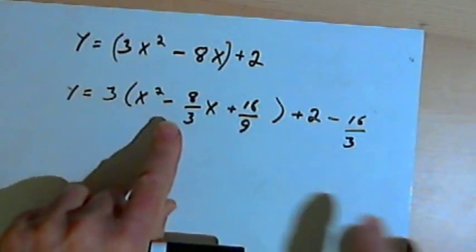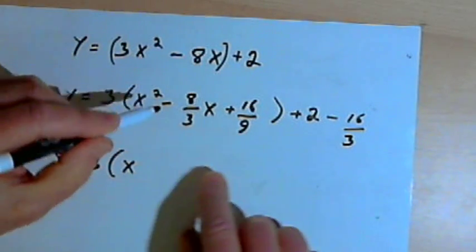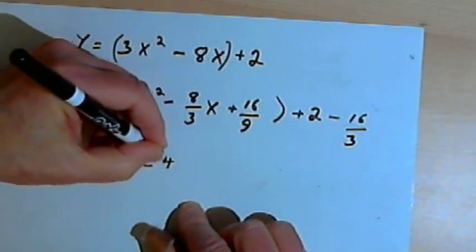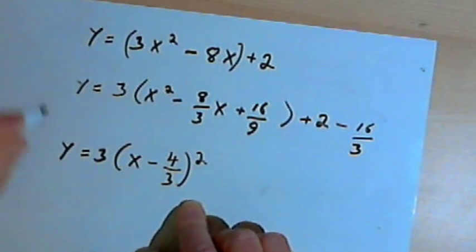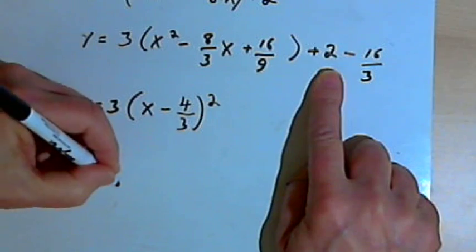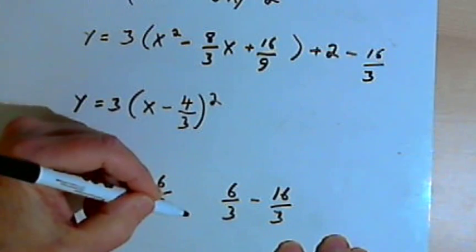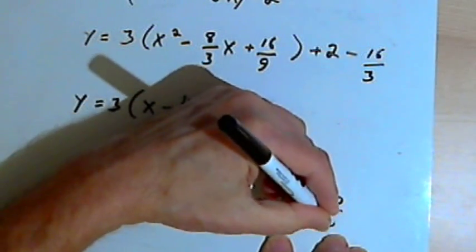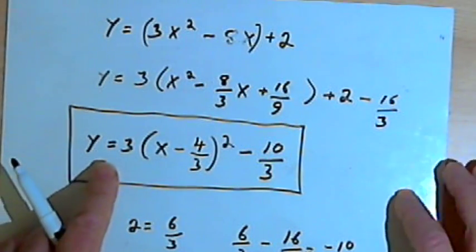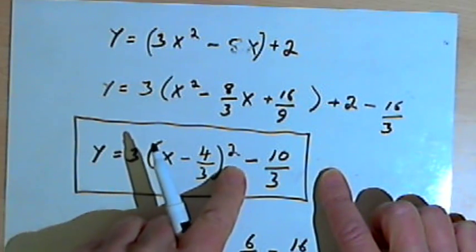Now let's turn this into a binomial squared and clean up everything else. I'm going to have y equals 3 times x — my middle term here is negative 8 thirds x, so the middle coefficient is negative 8 thirds; I just want half of that, which is negative 4 thirds — that's going to be squared. And then I've got this plus 2 minus 16 thirds. Well, 2 equals 6 thirds, and I want 6 thirds minus 16 thirds, which is negative 10 thirds. So this would be minus 10 over 3. So y equals 3 times the expression x minus 4 thirds squared minus 10 thirds — this is the vertex form.